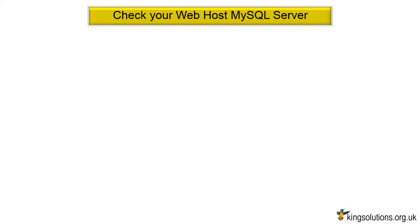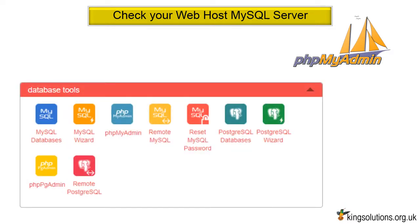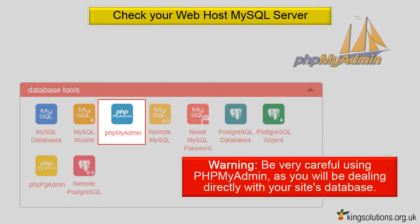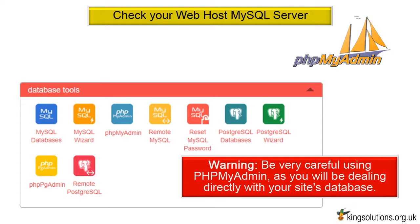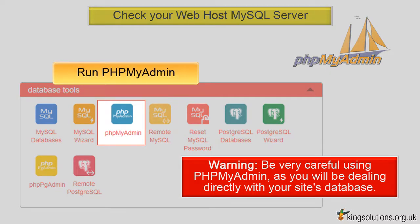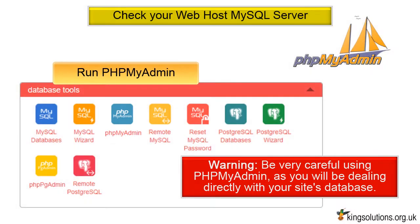Check your web host MySQL server. One way to check on your database outside of WordPress is by using phpMyAdmin. phpMyAdmin is included with most hosting plans and can be found in your cPanel dashboard. Warning: be very careful using phpMyAdmin, as you will be dealing directly with your site's database. To access the database, go to your cPanel, run phpMyAdmin and connect to your database. If you cannot connect to your database, then there is definitely something wrong with the server — contact your hosting company. If you can connect, then you need to verify that your database user has sufficient user permissions.